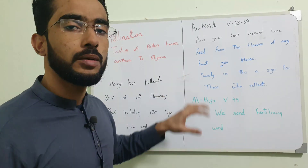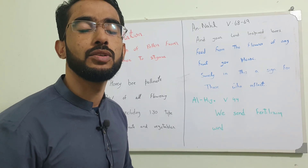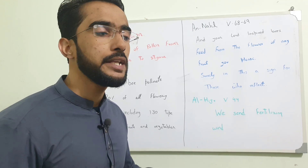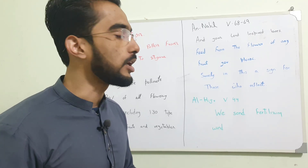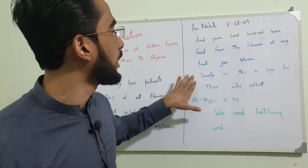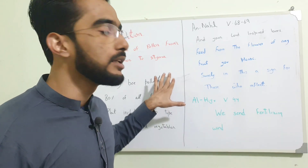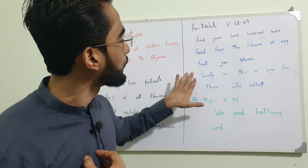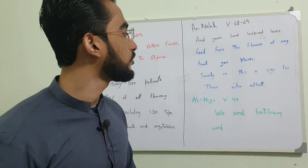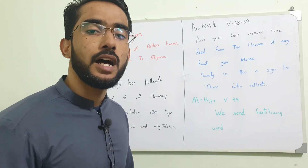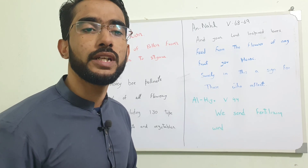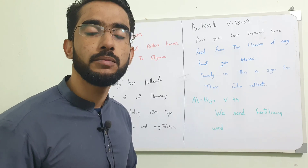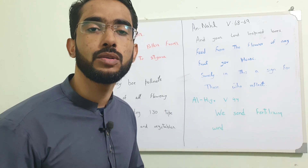Who could have told about these things in these verses 1400 years ago, when there was no distinction between angiosperms and gymnosperms, and no knowledge about plants? Who could have revealed these verses? We have to understand that it is the One who created this universe. Surely there is a sign for those who reflect. Allah says that He created the universe — go and seek it so that you could find Him, in the way He created the universe.